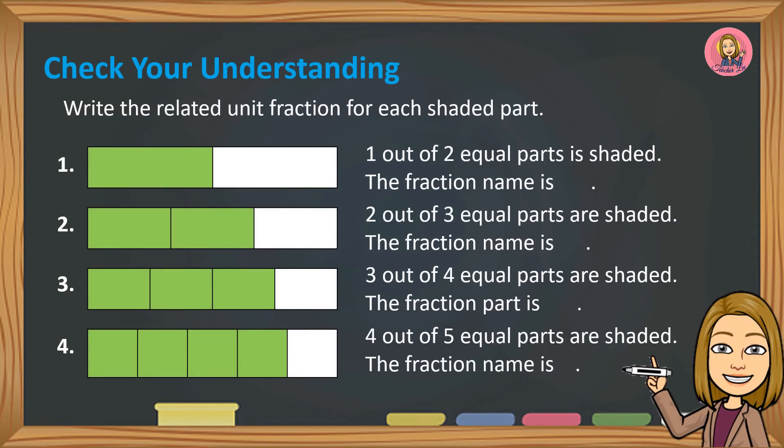Check your understanding. Write the related unit fraction for each shaded part. Number one: one out of two equal parts is shaded. The fraction name is one half.